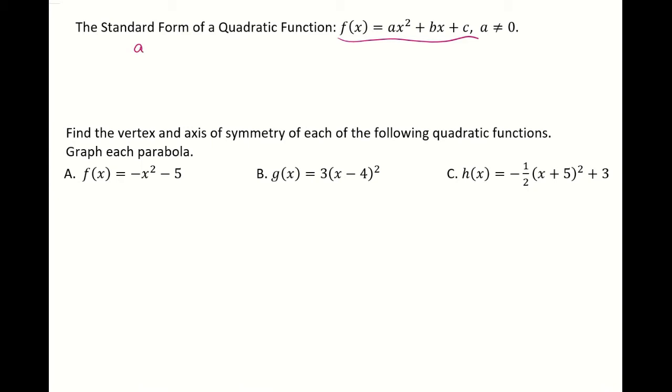If your a is positive then your graph is a parabola facing up. If your a is a negative number then your graph is a parabola facing down.